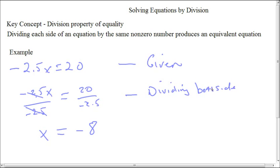We're dividing both sides by negative 2.5, and this is what we get as our answer.